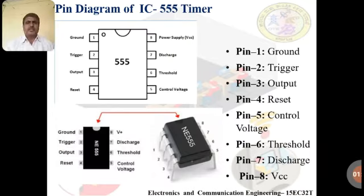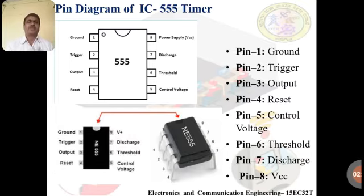Now we will see the pin diagram. As you can see in the diagram, it has a total of eight pins — four pins on one side and the remaining four on the other side. This type of IC package is called a DIP package, that is, Dual In-Line Package.